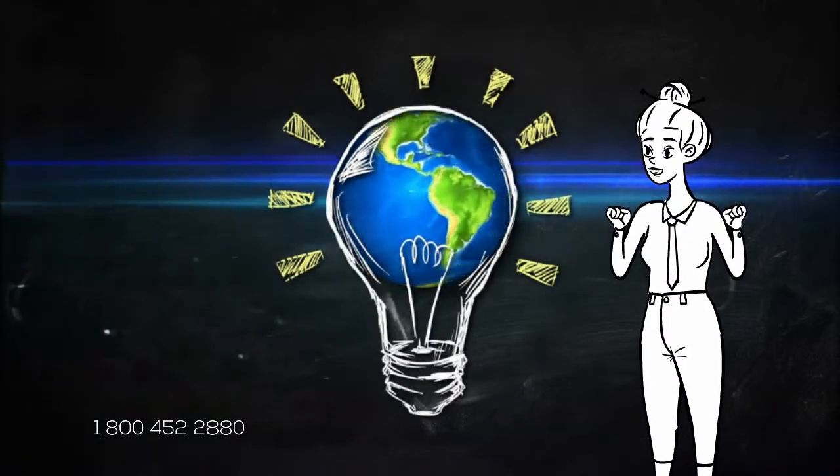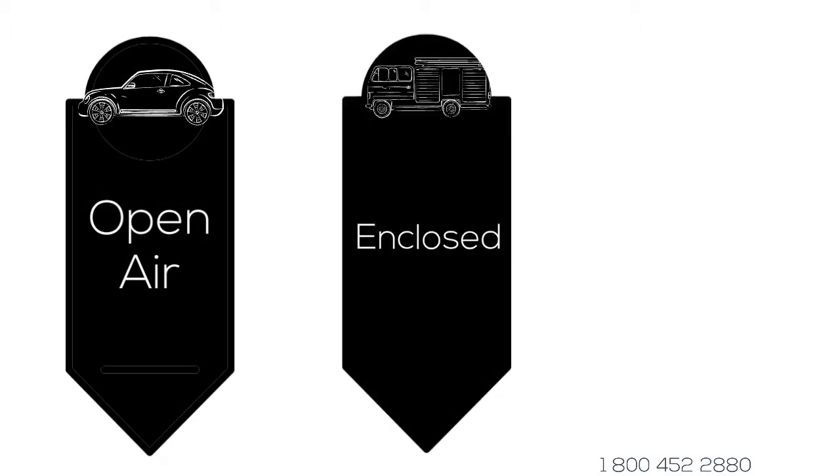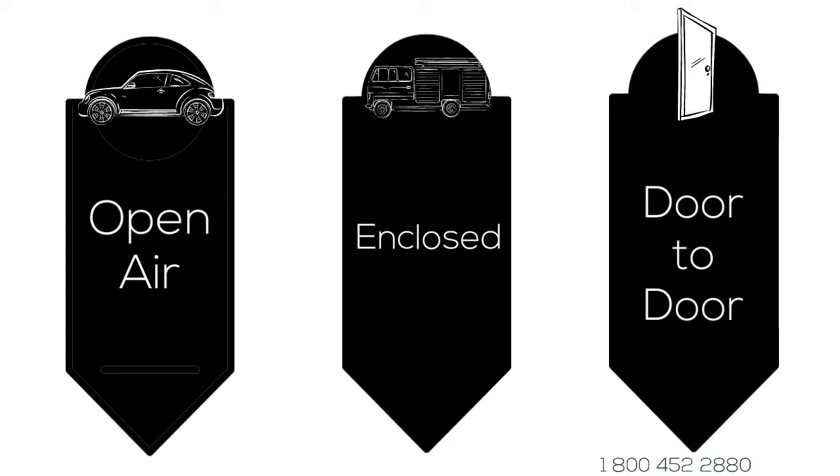We offer different types of shipping services that will fit any budget. Open air, the fastest and cheapest way to transport your vehicle. Enclosed, a little more time to deliver, but protection from all the elements. Door to door, a way to deliver your vehicle right to your doorstep.